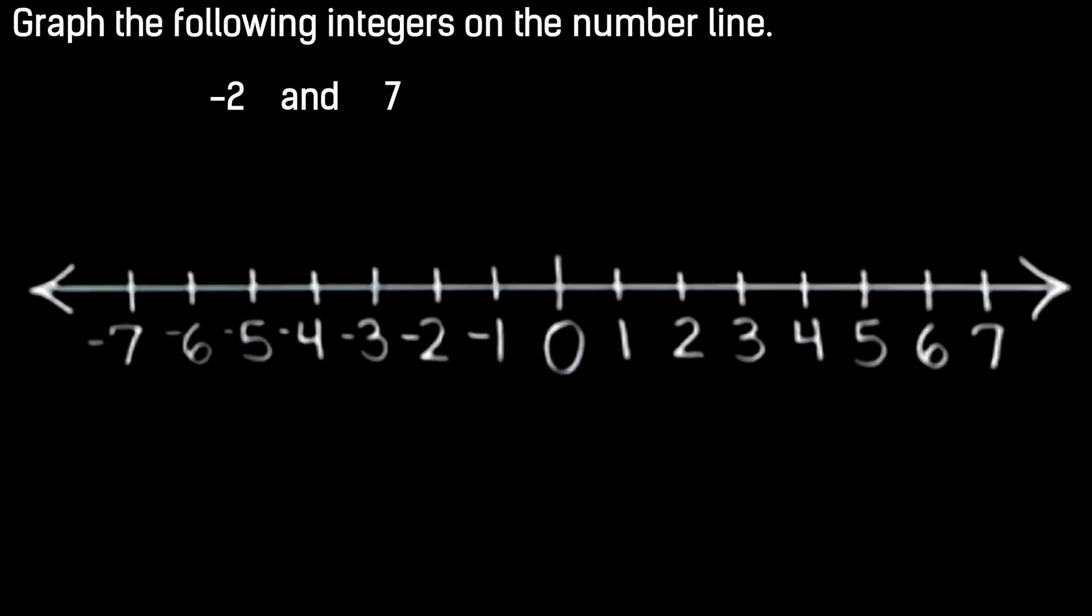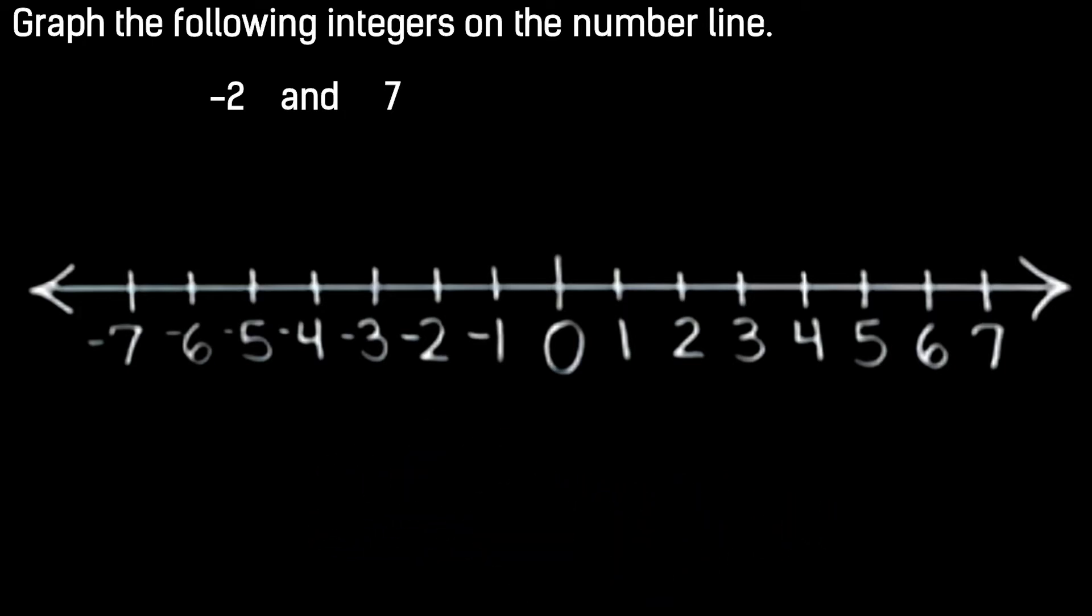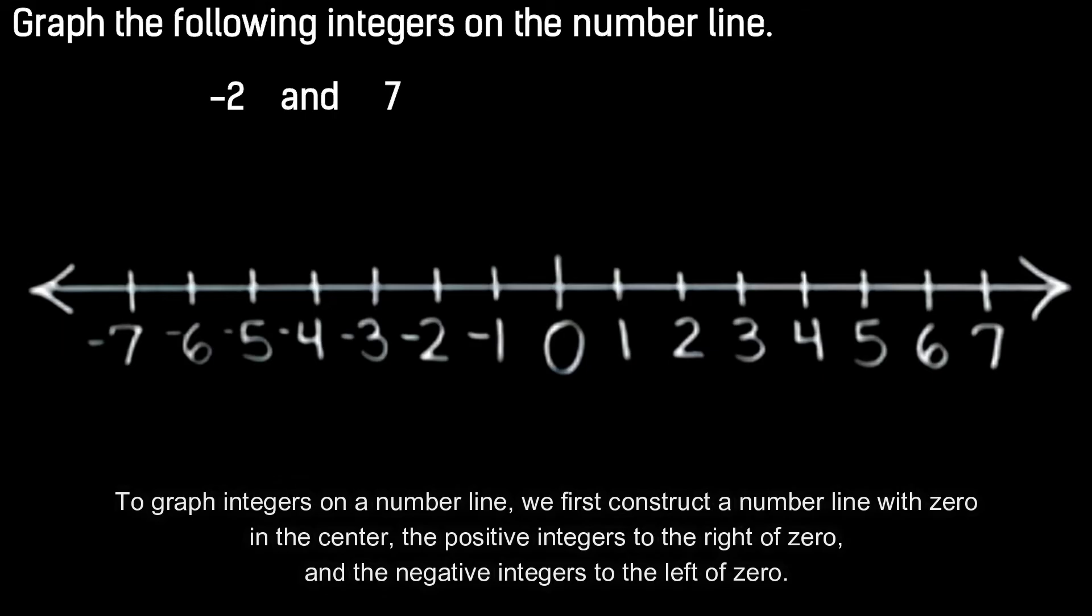So now that we know a little bit more about integers, let's see if we can graph them. Here we're asked to graph the following integers on a number line, negative two and seven. To graph integers, we first construct a number line with zero in the center, all units to the right of zero with positive integers, and all units to the left of zero with negative integers.